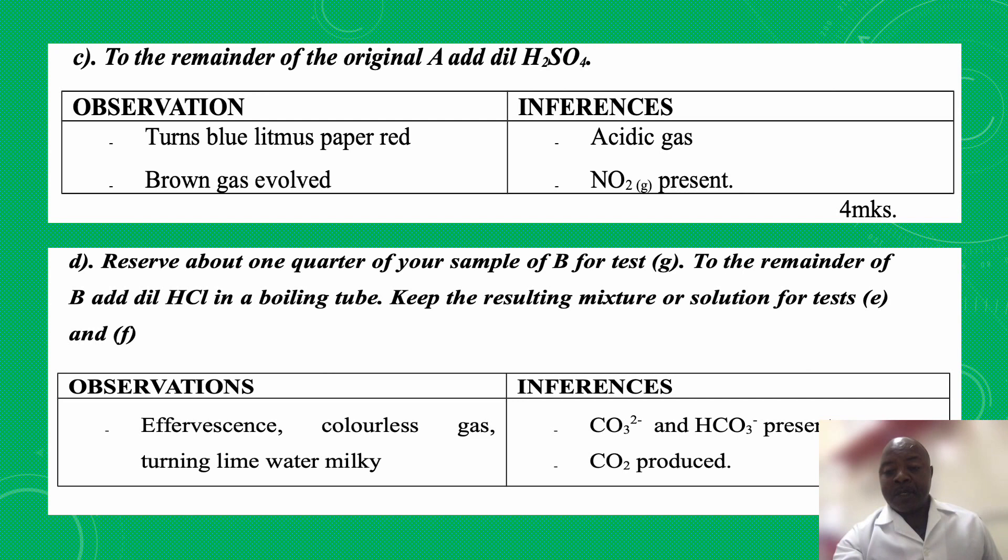On the inference section, the possible ions will have CO3 2- and HCO3-. Those are the possible anions that are there. And then for the gas, under the inference section, you will also put carbon dioxide produced. The examiner will look that all these are being produced and are presented in that order.